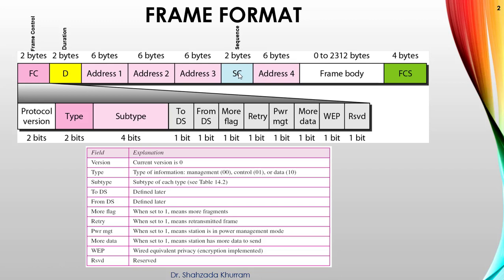Next one is address 4, normally it's not using right now. And then there is a frame body. Frame body means the data, actual data is in this frame body. And last one is FCS, frame check sequence.